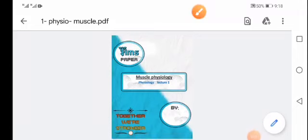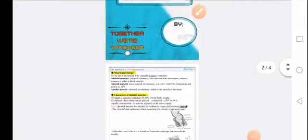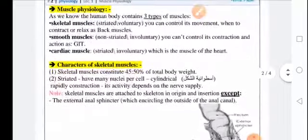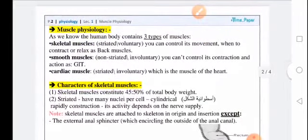Hi, this is our first physiology lecture. This lecture is about muscle physiology. First of all, you have to know that there are three types of muscles: skeletal, smooth, and cardiac.